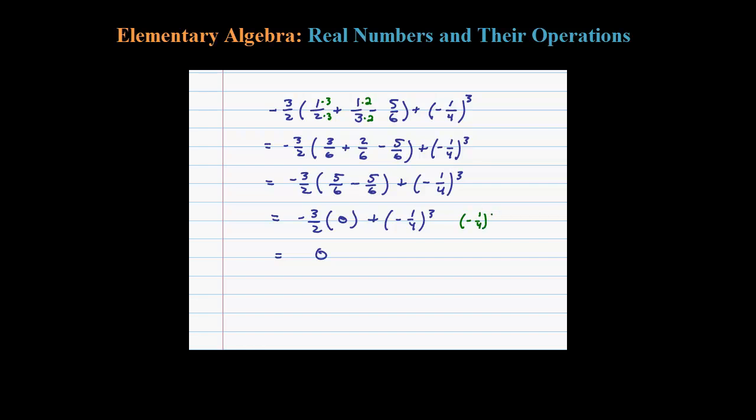Negative 1/4 cubed is the same thing as negative 1/4 times negative 1/4 times negative 1/4, right? So the 3 means to multiply the base times itself 3 times. And 3 negatives certainly makes a negative. 1 times 1 times 1 is 1, 4 times 4 is 16, times another 4 is 64. So we did a little bit of side work and we figured negative 1/4 cubed comes out to be negative 1 over 64.